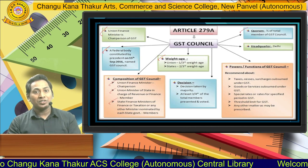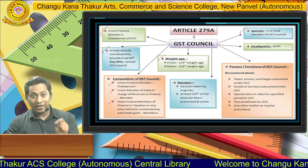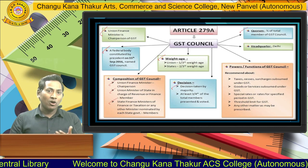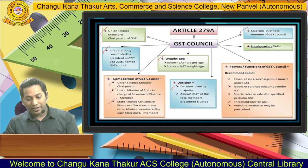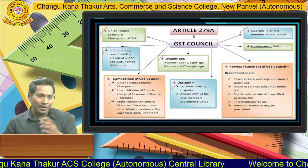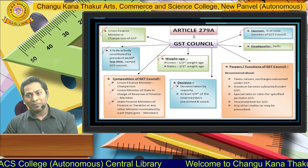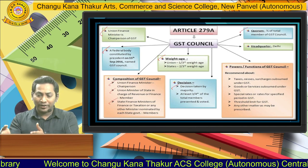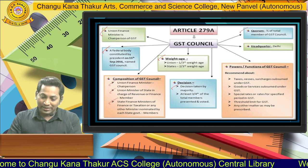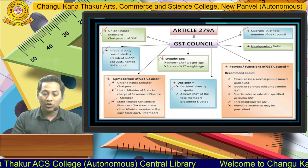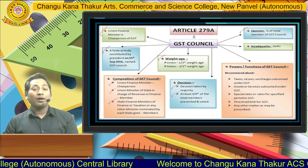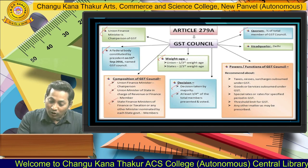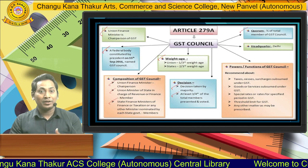The GST Council headquarter is established in Delhi. Regarding decision-making, decisions are taken on a majority basis. For example, if 10 people agree with a circular but 23 disagree, the decision swings with the majority — the disagreement side. Additionally, at least three-fourths of the total members present must vote for a decision to be taken during the GST Council meeting.